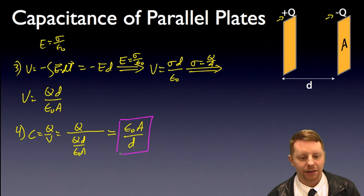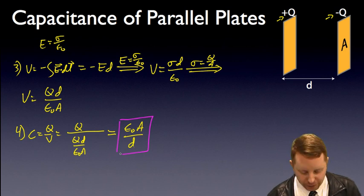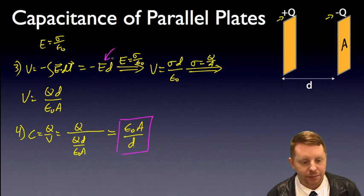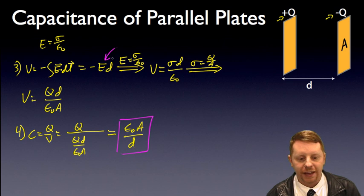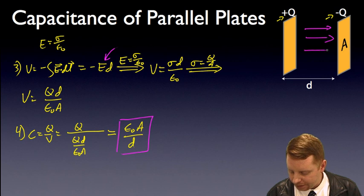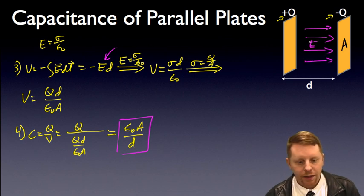C equals epsilon naught A over d — the capacitance of a parallel plate capacitor. Notice that the electric field between the plates, since V equals minus E times d, is constant as long as you stay far from the edges of those plates. So we have a constant electric field pointing from positive to negative between our two plates.